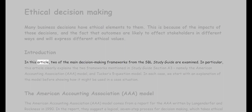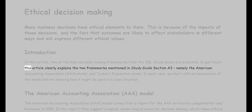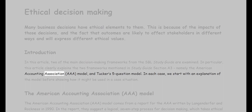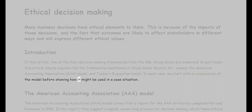In this article, two of the main decision-making frameworks from the SBL Study Guide are examined. In particular, this article clearly explains the two frameworks mentioned in Study Guide Section A3, namely the American Accounting Association (AAA) model and Tucker's five-question model. In each case, we start with an explanation of the model before showing how it might be used in a case situation.